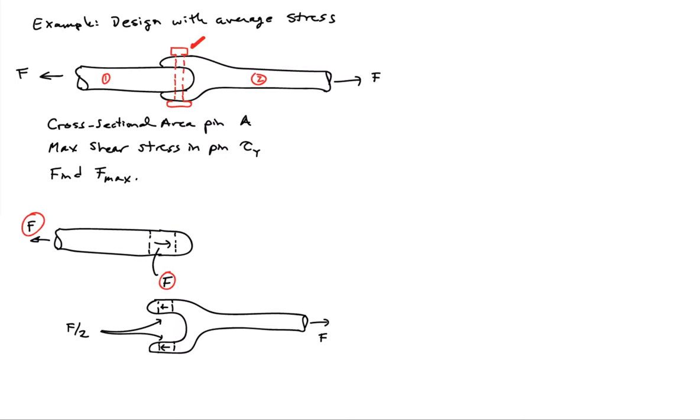If I make a free-body diagram of part two, to keep it in equilibrium, I'm going to have two forces of F over two acting through the hole that's been drilled through the ends of piece two. That keeps it completely in equilibrium, assuming there's symmetry in the distances.